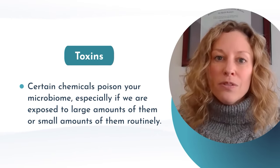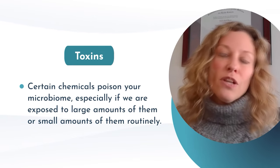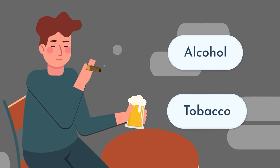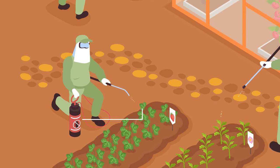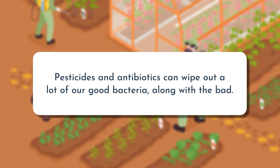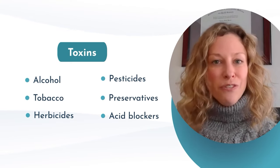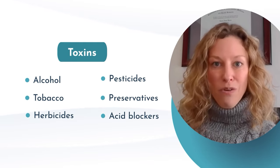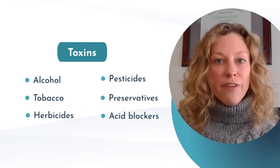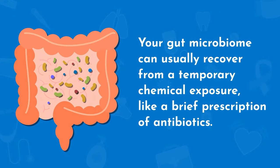Another factor that influences our microbiome is our exposure to toxins. Certain chemicals poison your microbiome, especially if we are exposed to large amounts or small amounts of them routinely. This includes environmental toxins such as alcohol, tobacco smoke, pollutants, and herbicides or pesticides that could be on our foods. Pesticides and antibiotics can wipe out a lot of our good bacteria along with the bad. Preservatives in our food may also be toxic for our gut microbiome. Certain medications like acid blockers can affect our microbiome because they change the pH of the gut. Your gut microbiome can usually recover from a temporary chemical exposure like a brief antibiotic prescription, but chronic exposure can affect its composition long term.